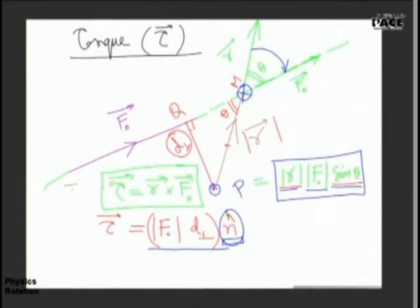I will give you a simple question based on this definition — let me see how many of you can tell me the right answer. Find the torque acting on this body which I am going to draw right now. Torque is a vector, so you have to tell me the magnitude as well as specify the direction. The diagram is going to be three-dimensional. Focus on the theme — just wait and watch, you will enjoy.